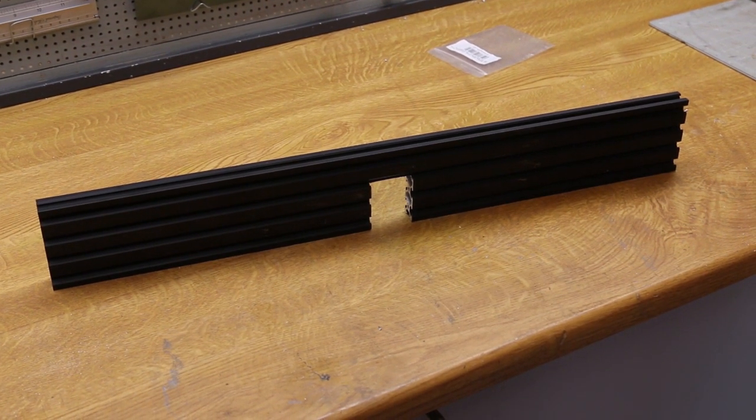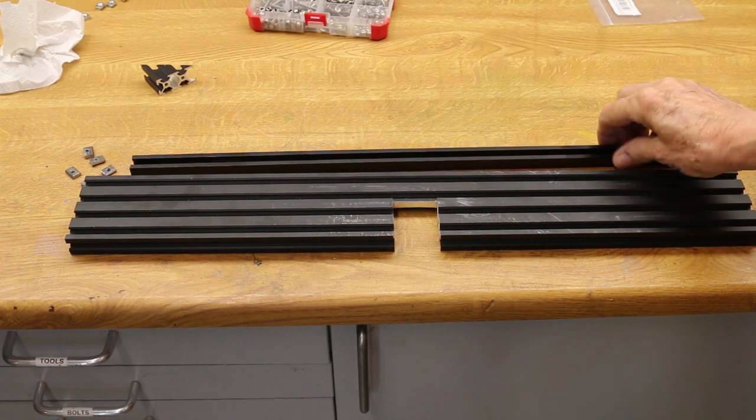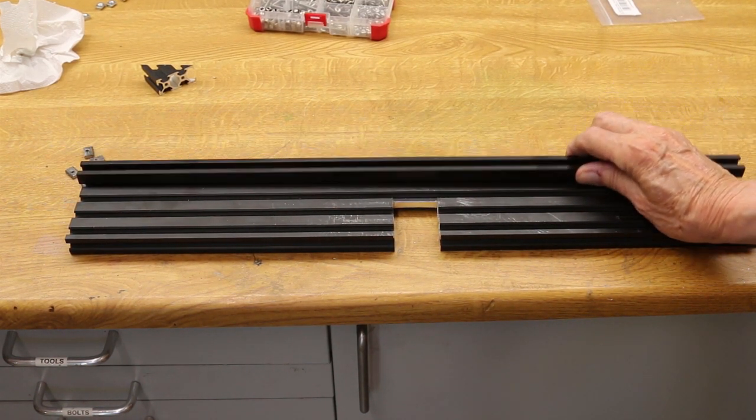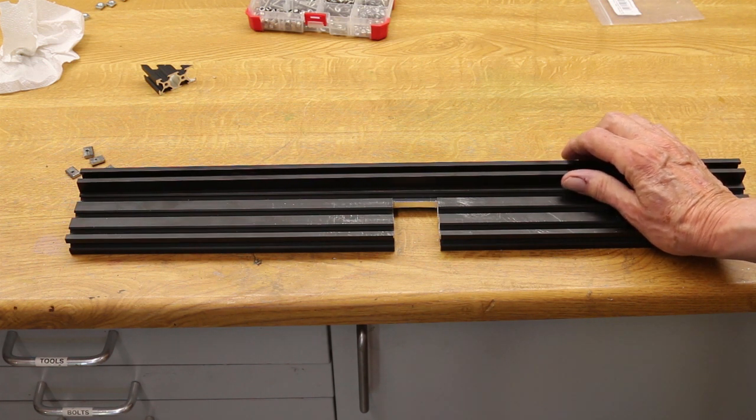In this 2080 aluminum section. Next job is to mount the T-track on top of the rail to hold accessories like roller guides, feather boards, etc.